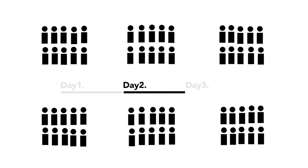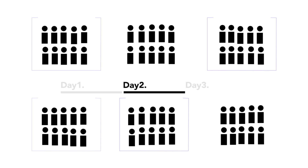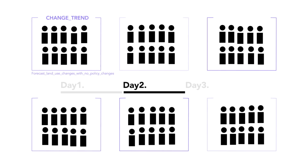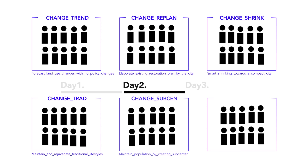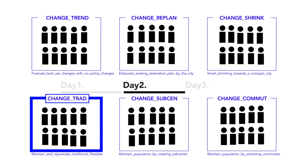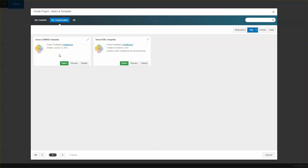On day 2, the participants are reorganized into 6 new teams. These 6 teams are to create change plans aiming at particular social objectives, such as smart shrinking towards a compact city, maintain and rejuvenate traditional lifestyles, to maintain population by attracting commuters of neighboring cities, and so on. Let's look at how one team leverages GeoPlanner to develop change plans with an objective to maintain and rejuvenate traditional lifestyles.